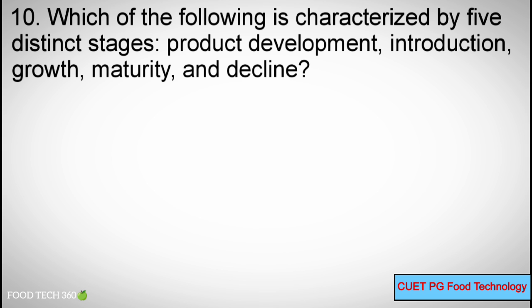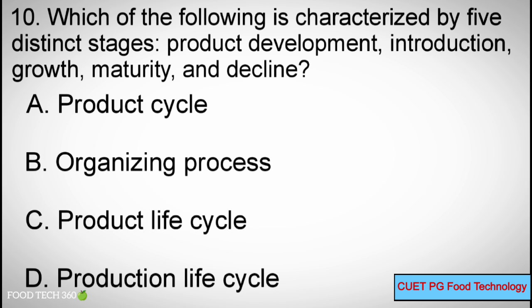Q10: Which of the following is characterized by 5 distinct stages — Product development, introduction, growth, maturity, and decline? A. Product cycle, B. Organizing process, C. Product life cycle, D. Production life cycle.